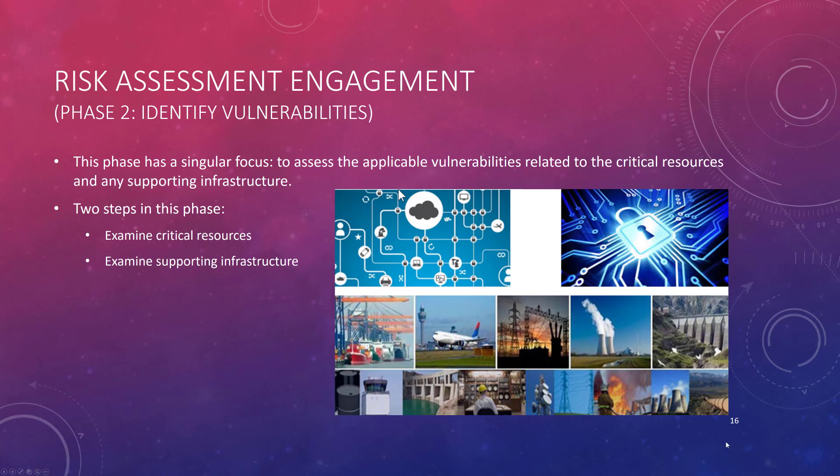Welcome back. This is going to be the third of six videos. What we're doing during this very short video is looking at phase two in the Octave Allegro model, and what we're doing is identifying vulnerabilities during this particular phase. So we'll look at the critical resources within a particular company and then examine the supporting infrastructure associated with those critical resources.